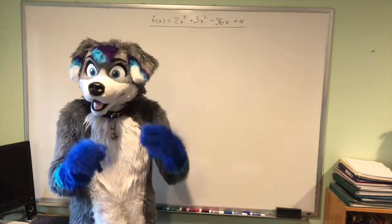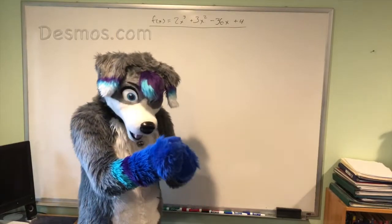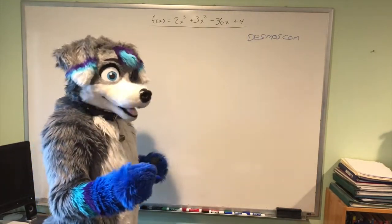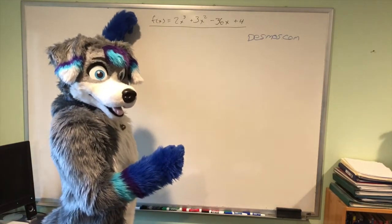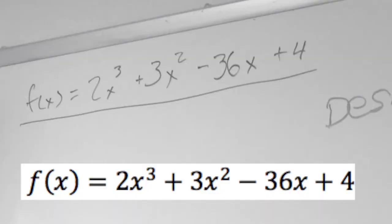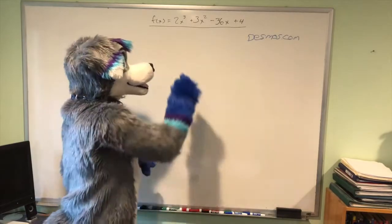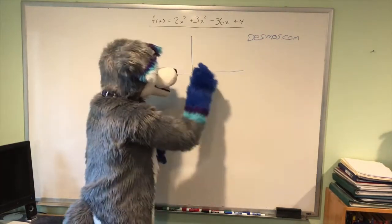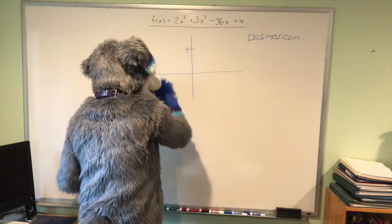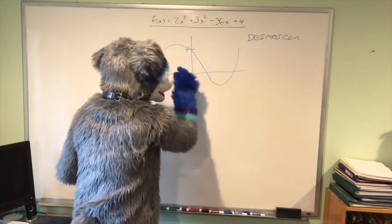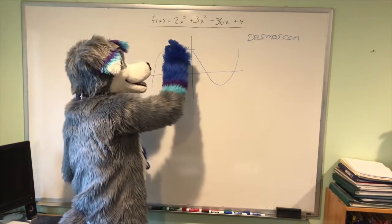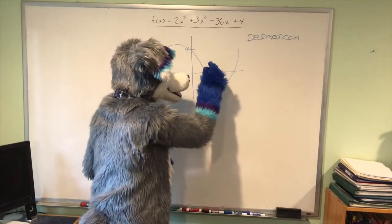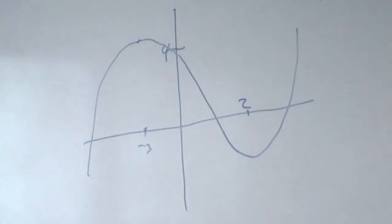A really good free online graphing utility is desmos.com — it has colors and all that good stuff. If you were to go there and take this function, the one I want to work with today, and graph it just to get a visualization of what we're looking at, you don't have to graph these things in general to do these problems. You would get something that looks like this: it comes up and down and up, and this spot is actually negative 3. This max — if you were to graph this — is actually negative 3, and this point here is 2.